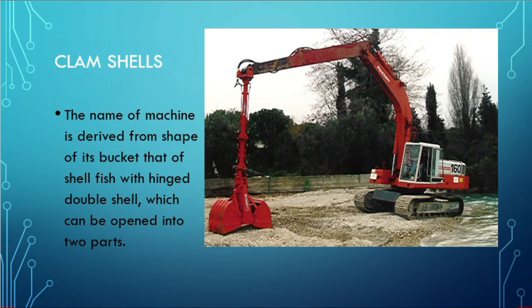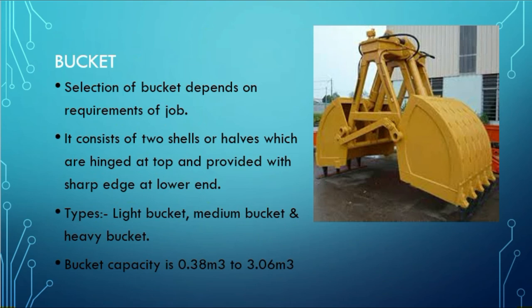Now we will be moving to the clamshell. Here you can see a clamshell. It is mainly named after its bucket, called a shell. It is also described as a shellfish with a hinge — a hinge of double shell. There is a hinge point where the bucket can rotate towards and away. There are two buckets in opposite directions. The selection of buckets can be made based on a chart — there are light buckets, medium buckets, and heavy buckets for different purpose applications.